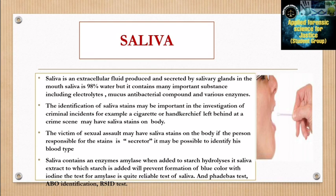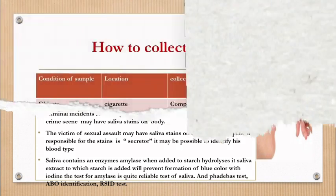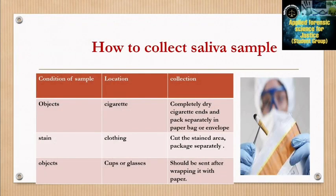Saliva contains the enzyme amylase; when added to starch, it hydrolyzes it. Saliva extract to which starch is added will prevent formation of blue color with iodine. The amylase test is a reliable test for saliva, along with the waist test, ABO identification, and the RSID test. To collect saliva samples: completely dry cigarette ends and pack separately in a paper bag or envelope; for stains on clothing, cut the stained area and package separately; for objects like cups or glasses, wrap with paper before sending.